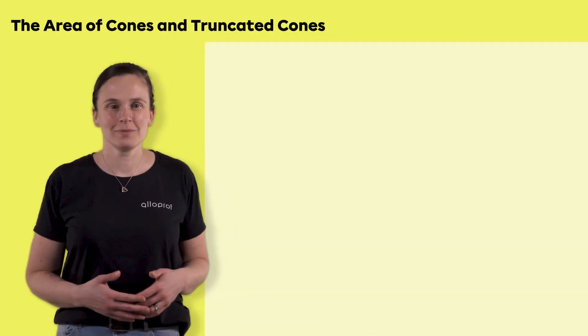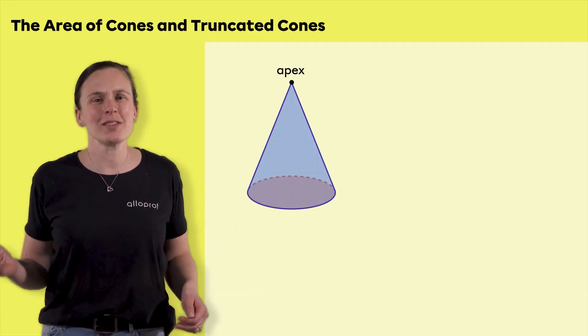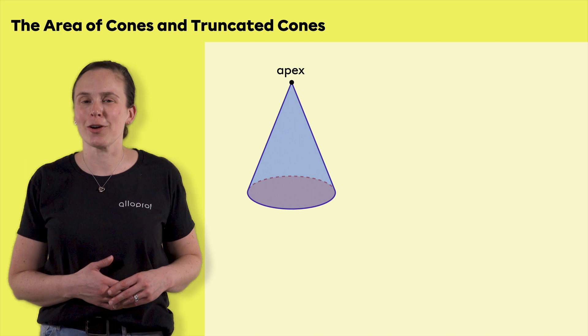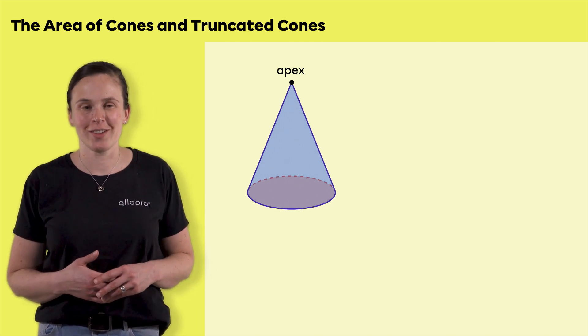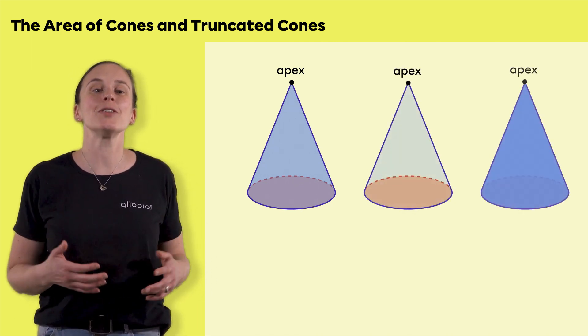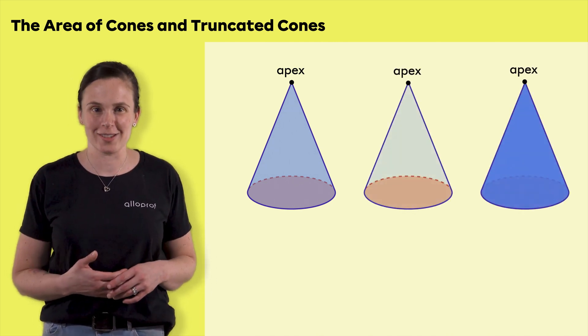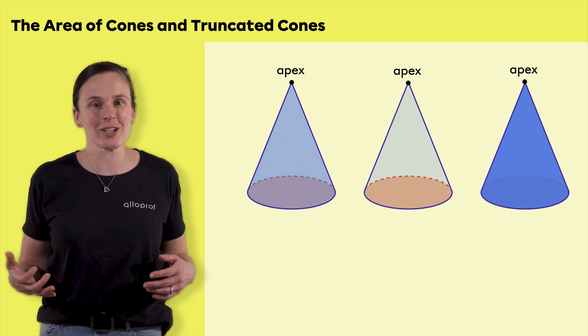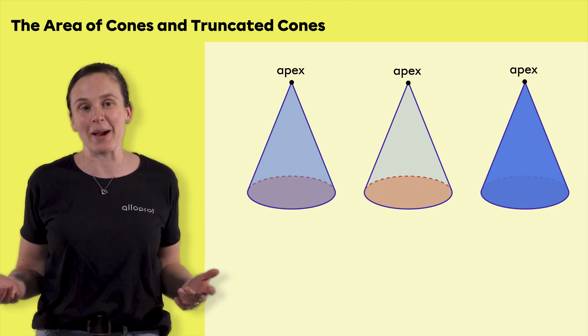In this video, I will show you how to find the total area of a cone and a truncated cone. A cone is a solid with a curved surface. It consists of a single circular base and a single lateral face. Its sole vertex is called an apex.